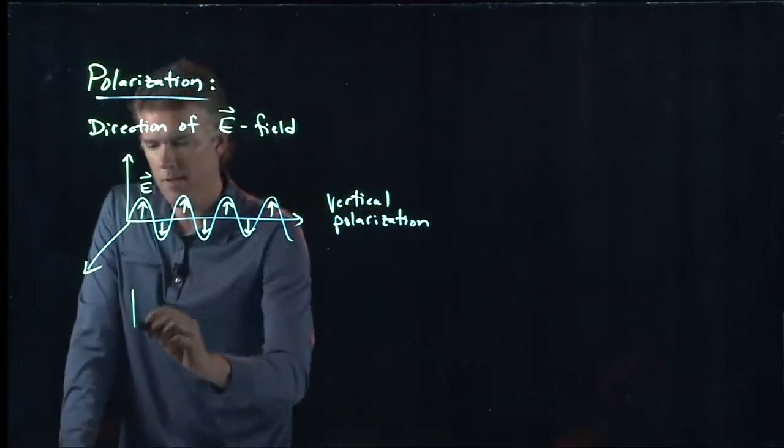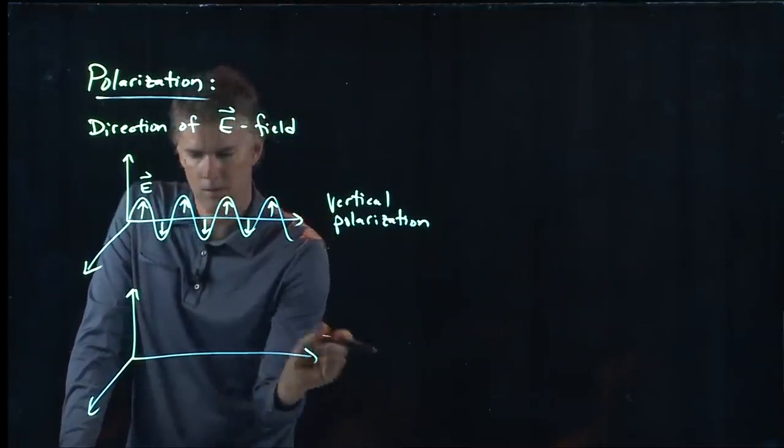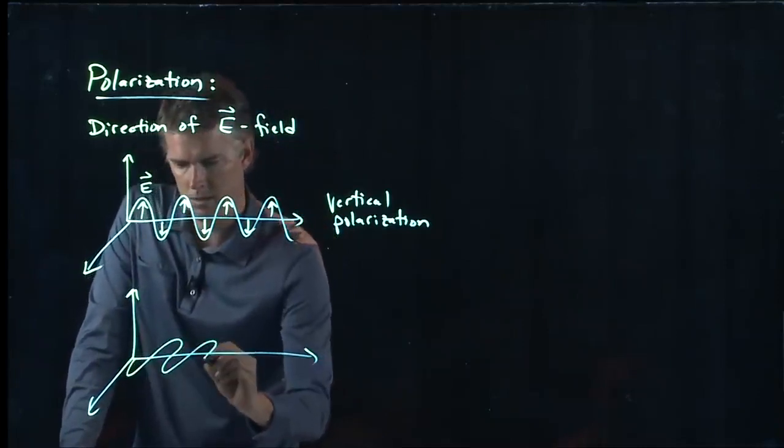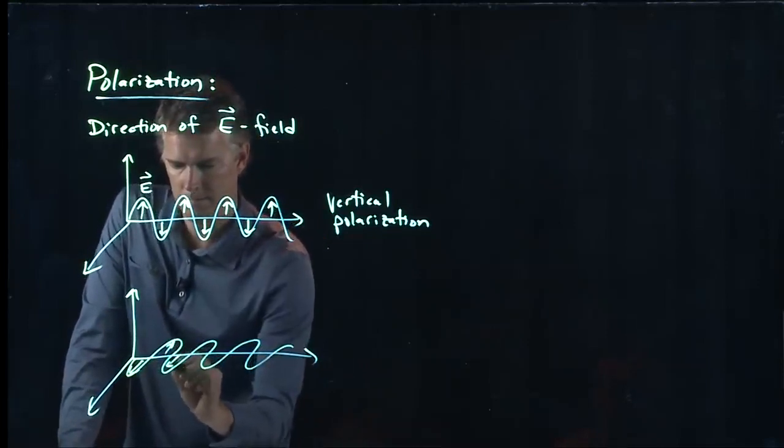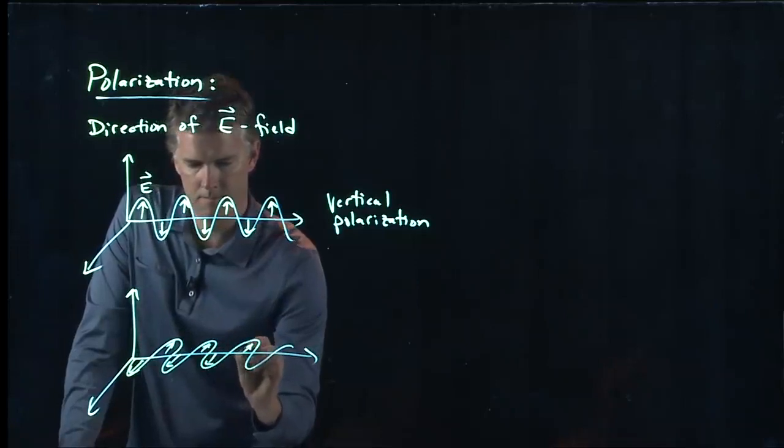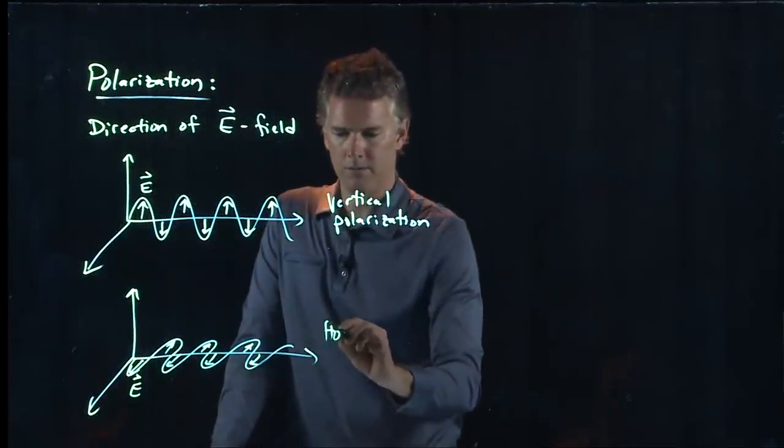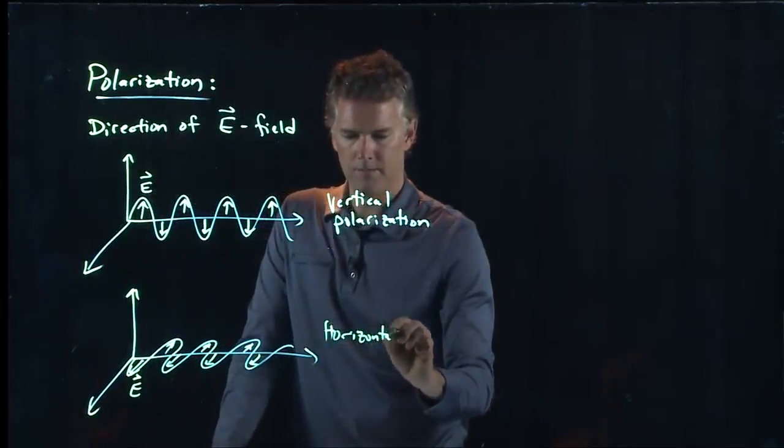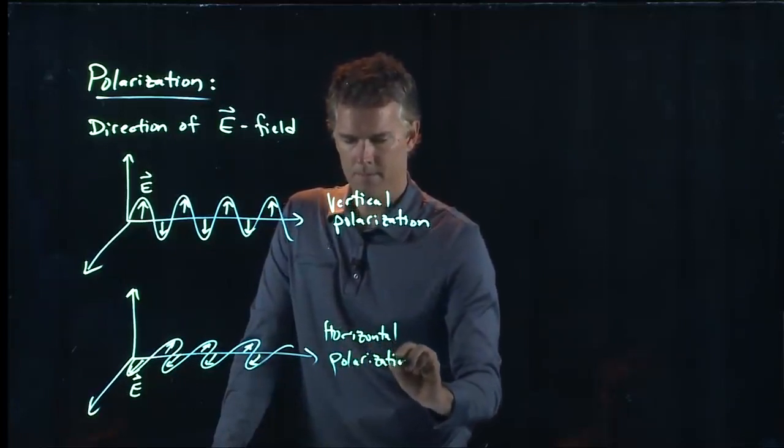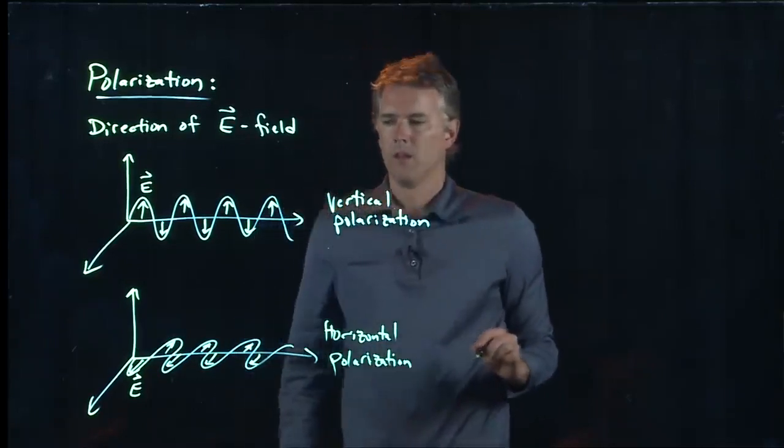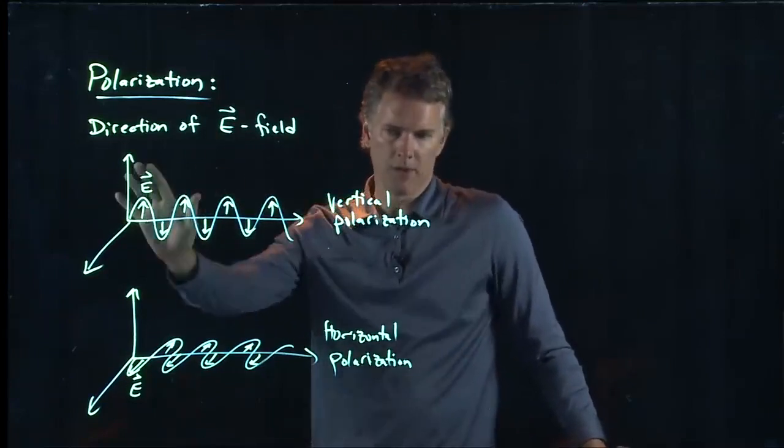But if you have a wave where the E field is in and out of the board, like so, then this is called horizontal polarization. So these are the two polarizations for an electromagnetic wave, either horizontal or vertical.